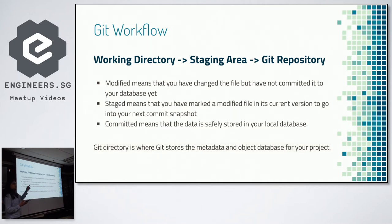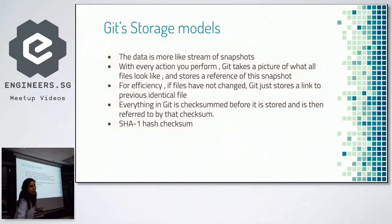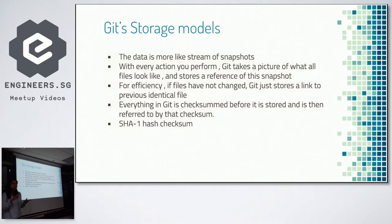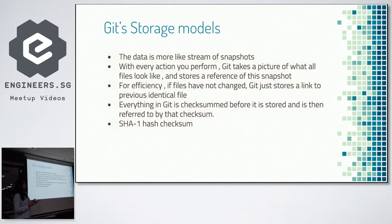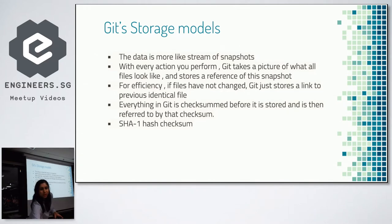When you read about any version control management system, you realize that these systems universally store a delta of changes — you have a file, you make some changes, and the system just takes a delta and stores that delta. But how Git does it is different: it will not store a file if no changes are made to it, so every file which is in the same state has just one copy.